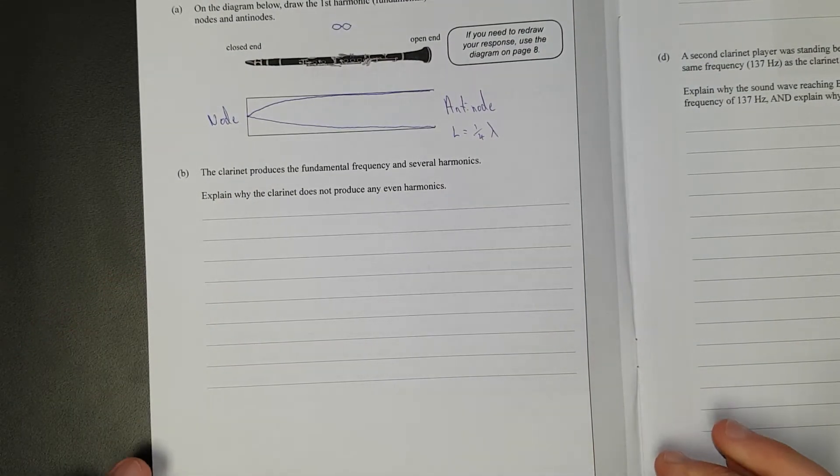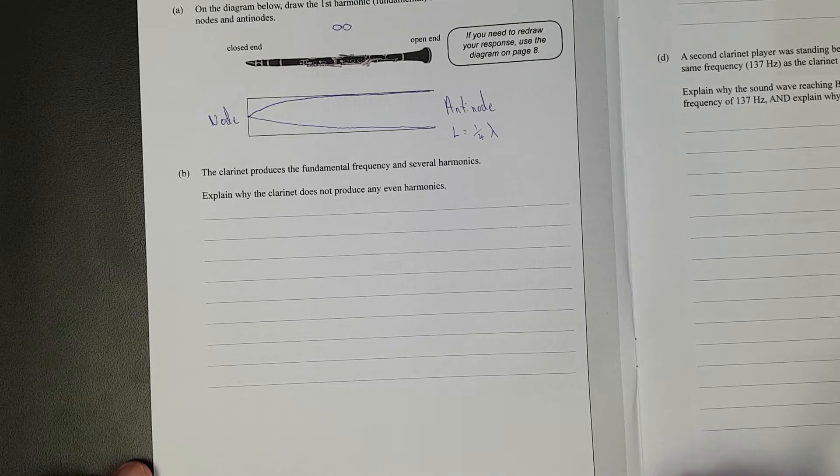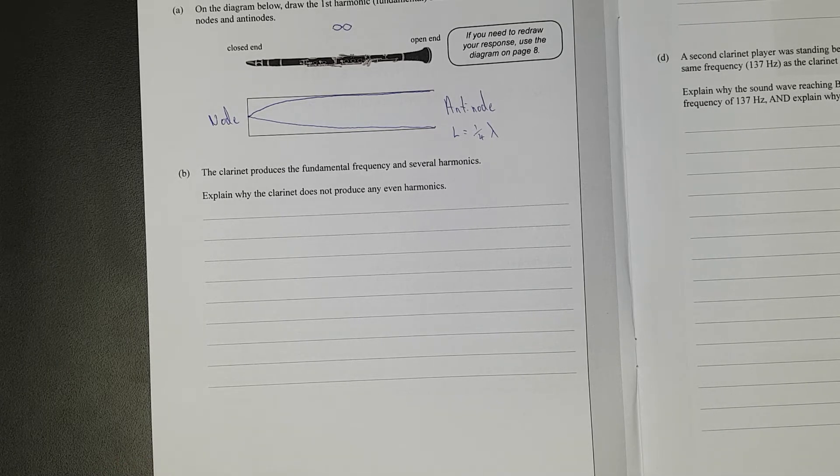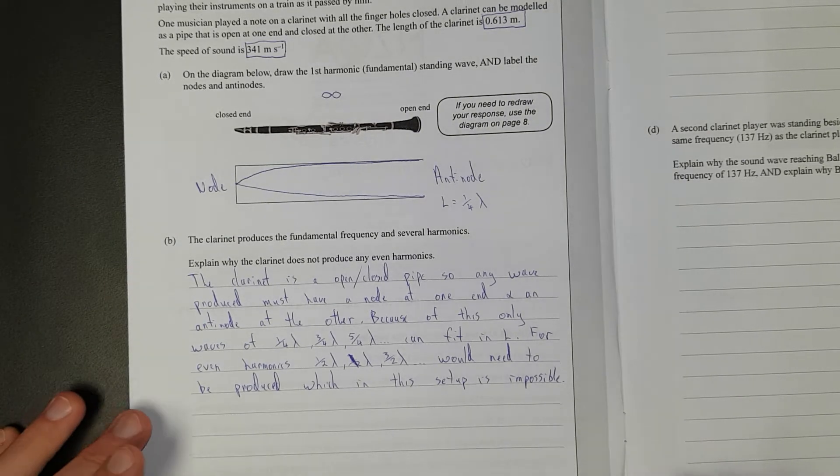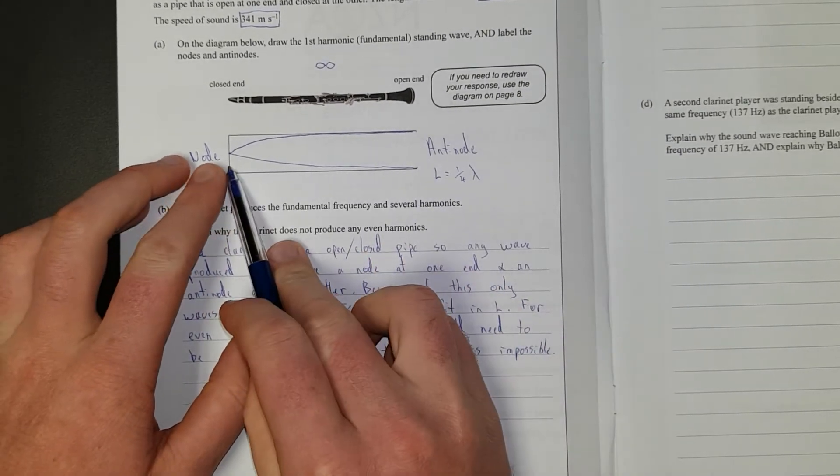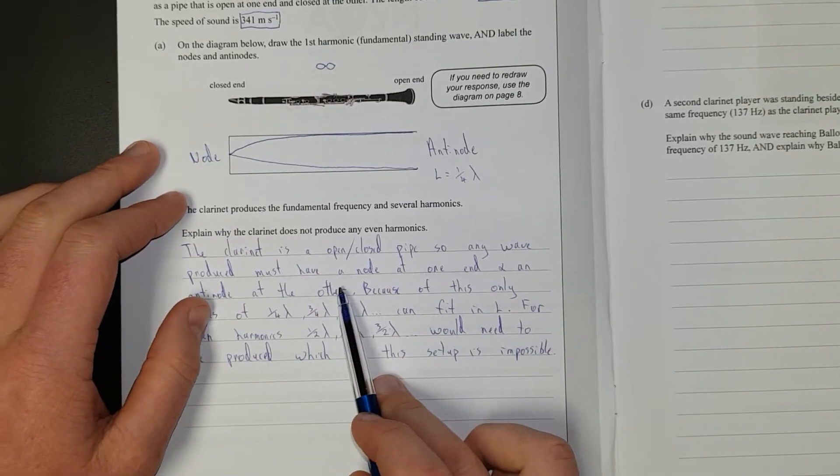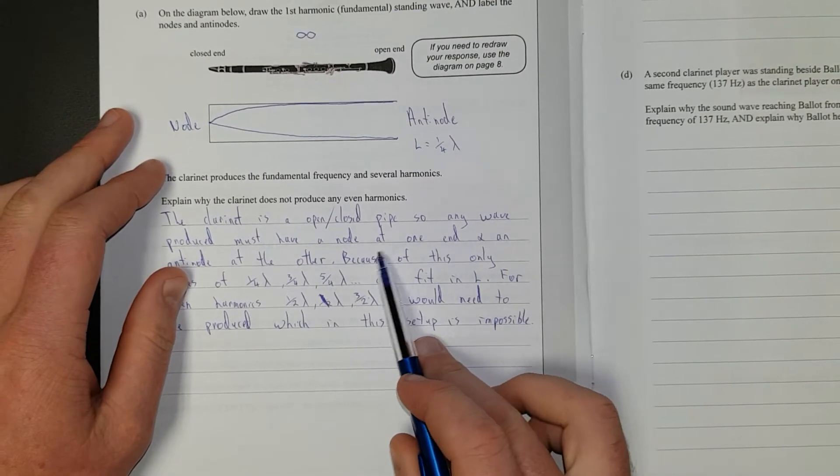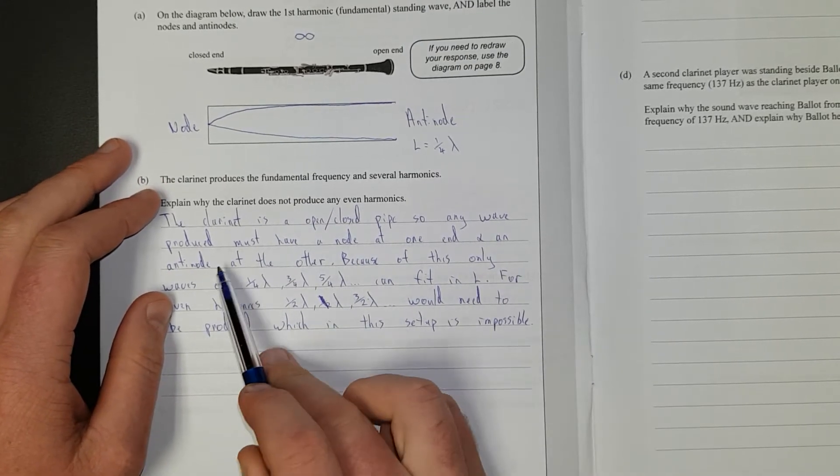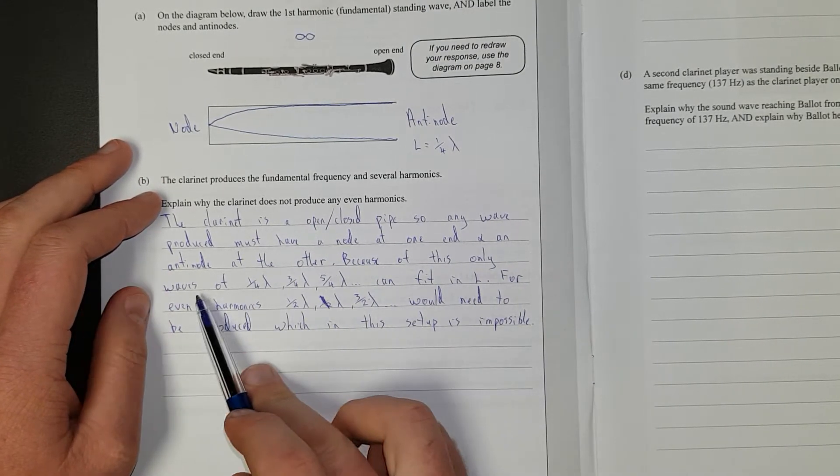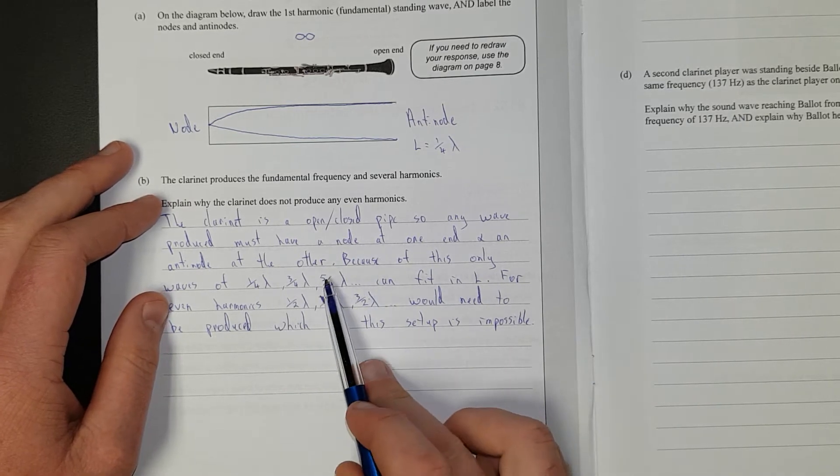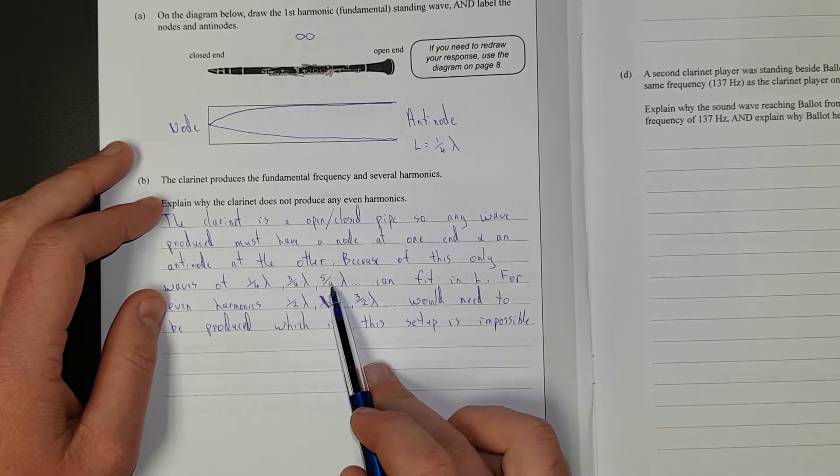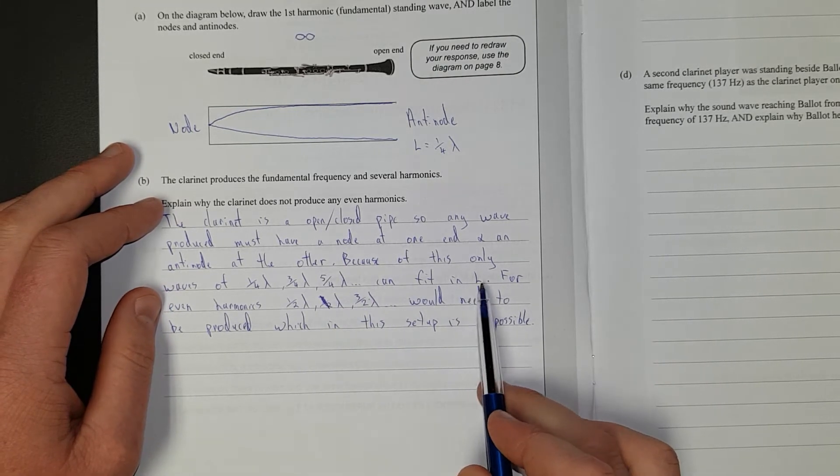Question B. The clarinet produces a fundamental frequency and several harmonics. Explain why the clarinet does not produce any even harmonics. So I'll just pause the video, write the answer, and then go. Right, so I've said the clarinet is an open and closed pipe. We can see that. There's the open and then there's a closed end. So any wave produced must have a node at one end and an anti-node at the other. Because of this, only waves of quarter wavelength or quarter lambda, three quarters lambda, and five quarters lambda can fit in L. In other words, equal to L.